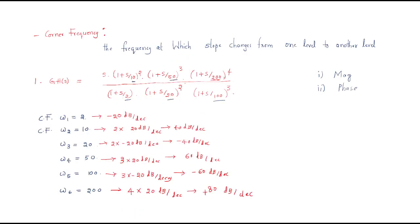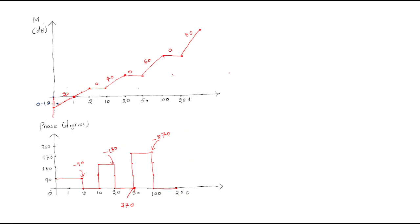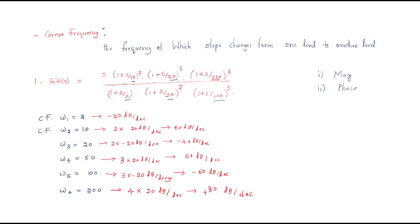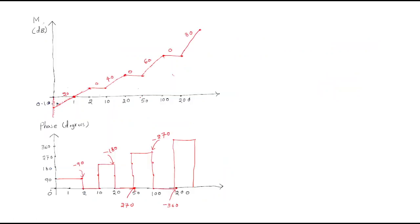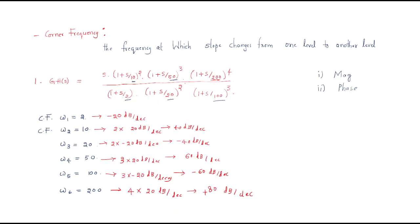At corner frequency 200, four zeros contribute plus 360 degrees, so the phase becomes plus 360 degrees. This is the procedure to draw the Bode plot whenever a transfer function is given — the magnitude plot and the phase plot. I hope all of you understand this session. Thank you.